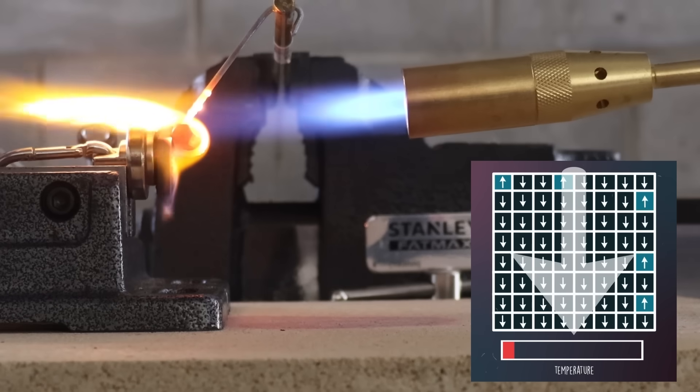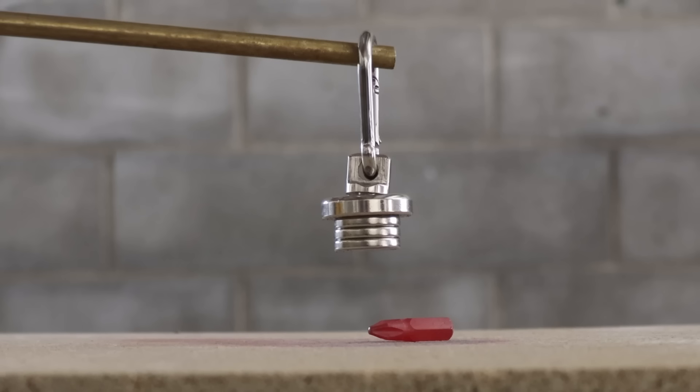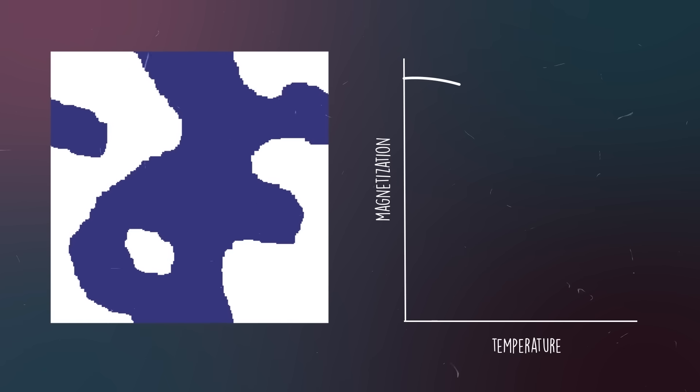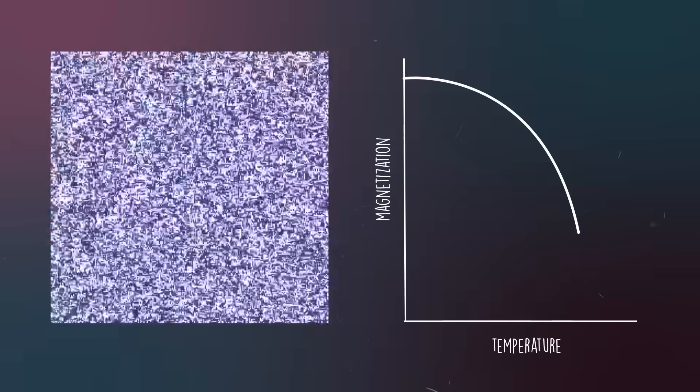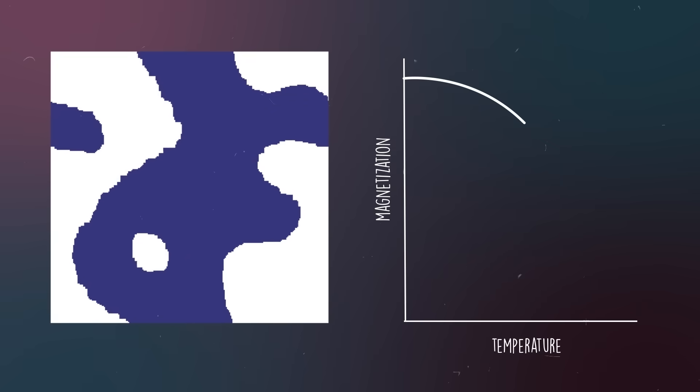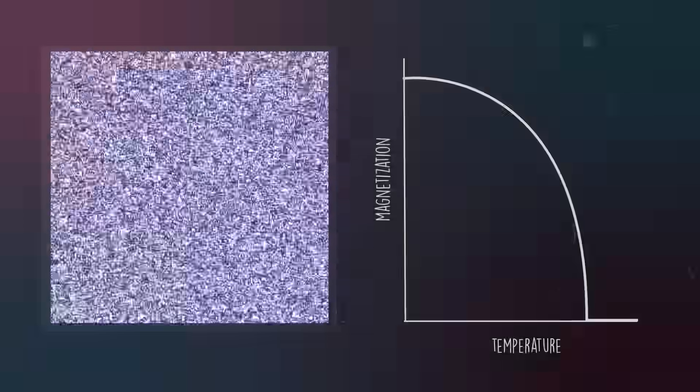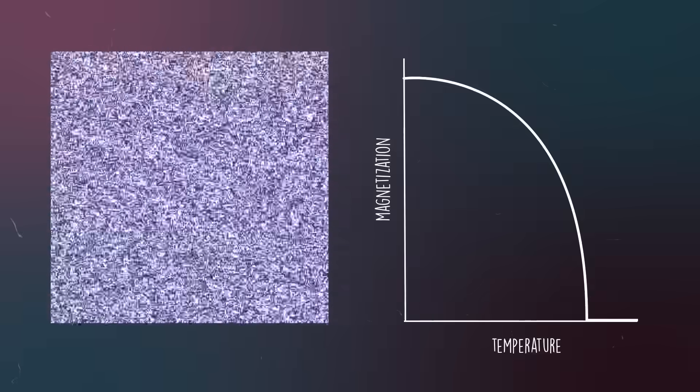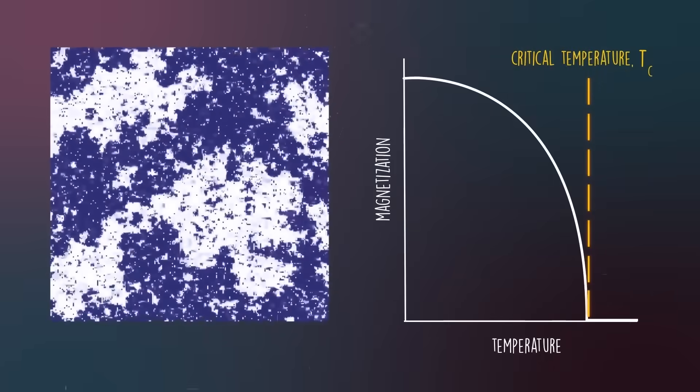So far, the Ising model is doing a great job of modeling a real-life magnet. At low temperatures, it's magnetic, and at high temperatures, it loses its magnetization. So does it predict this abrupt phase transition as well? It turns out the answer is yes. This is a simulation of the Ising model at different temperatures. You can see that around this temperature, the system changes very abruptly. I'll play that again so you can see it again. Right here. Why? You can probably guess that this is the Curie temperature, otherwise known as the critical temperature.